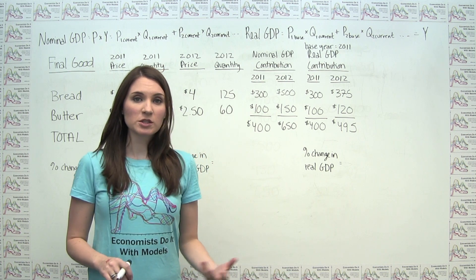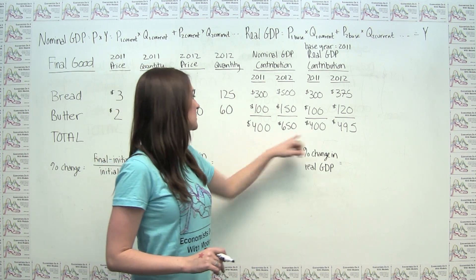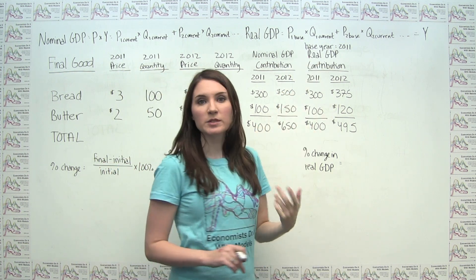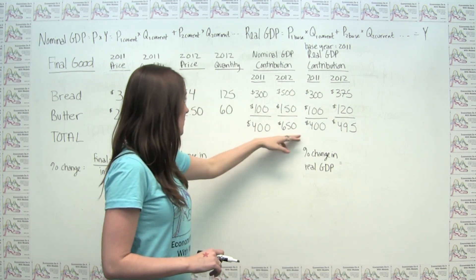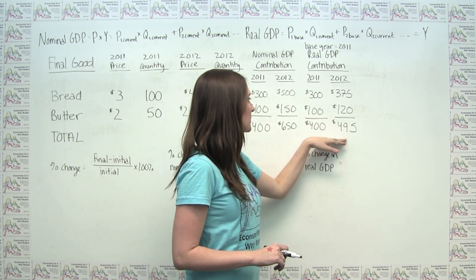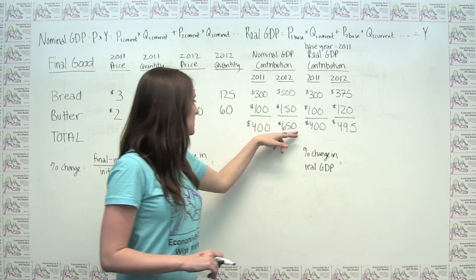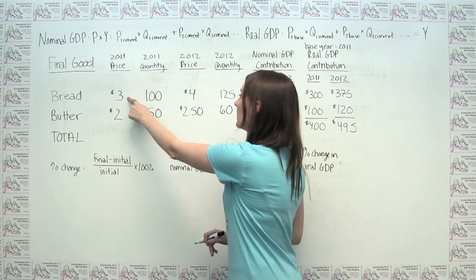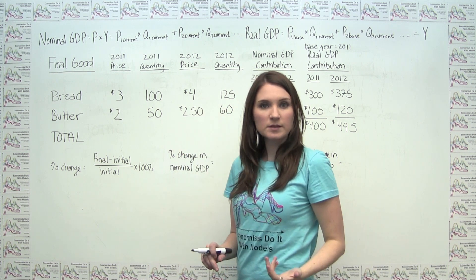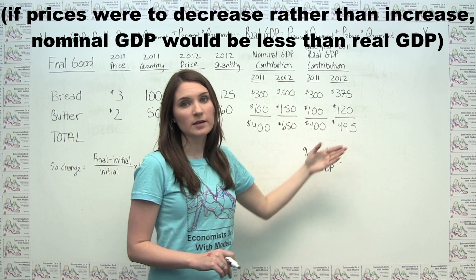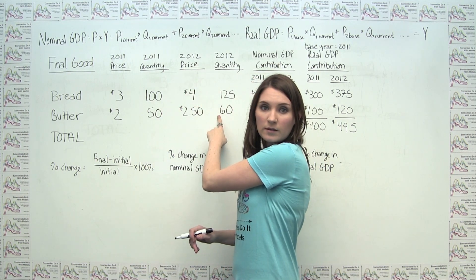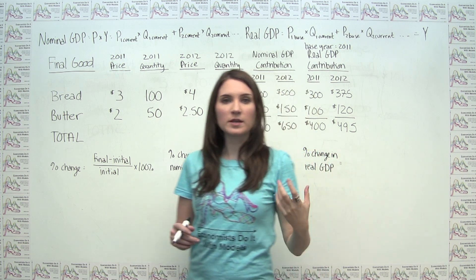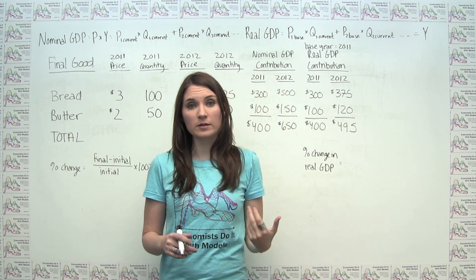It's helpful to think about how nominal GDP compares to real GDP. In the base year, nominal GDP and real GDP are the same. But in this example, our nominal GDP in 2012 — $650 — is larger than our real GDP in 2012 — $495. That's because nominal GDP considers both the increases in quantities of stuff produced and the increases in prices, whereas real GDP only considers the increases in the number of things produced, holding prices constant.